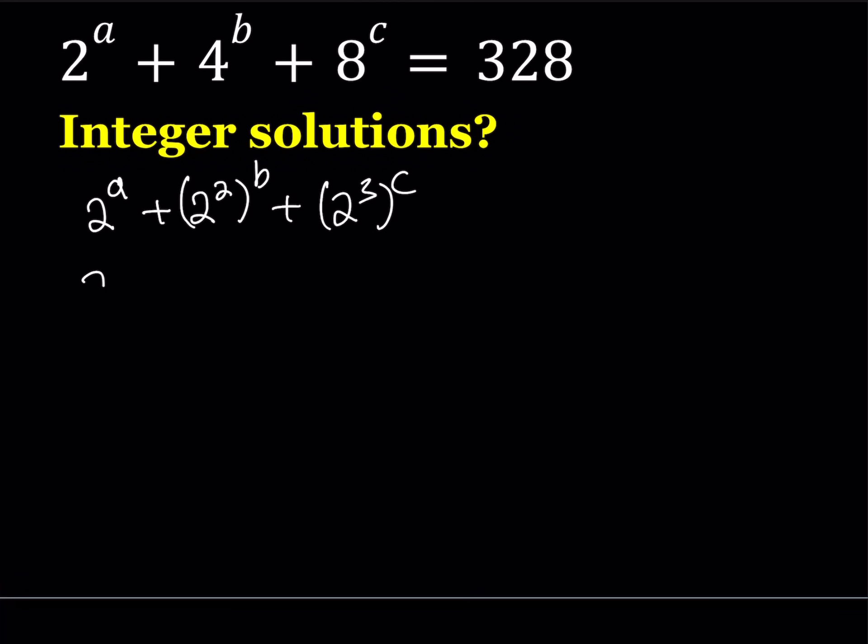From the power over power rule, we can just multiply these exponents. 2 to the power 2b, and 2 to the power 3c, and that equals 328.